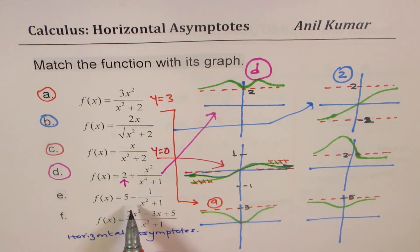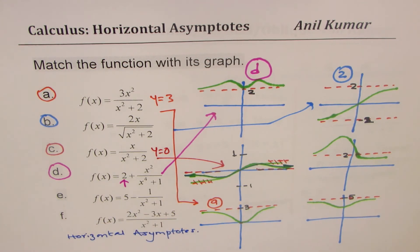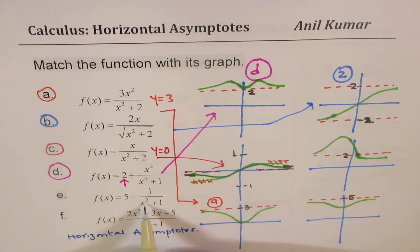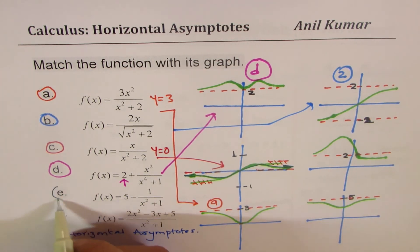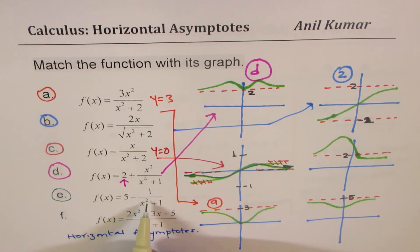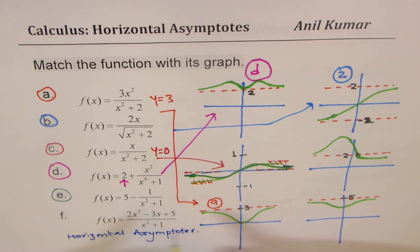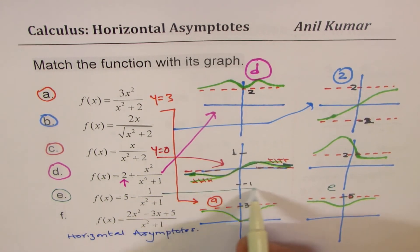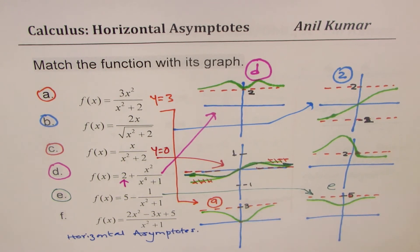Now equation e is 5 minus something, with x squared in the denominator. That means the horizontal asymptote is at y equals 5, and everything is below 5 — the subtracted term is always positive. So it matches with the graph where the curve approaches y equals 5 from below. That is equation e.